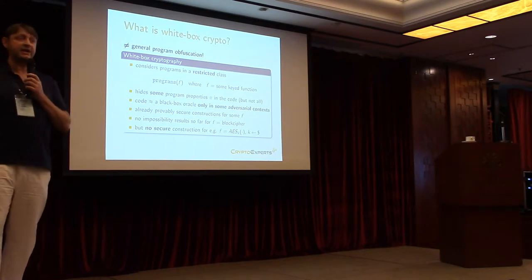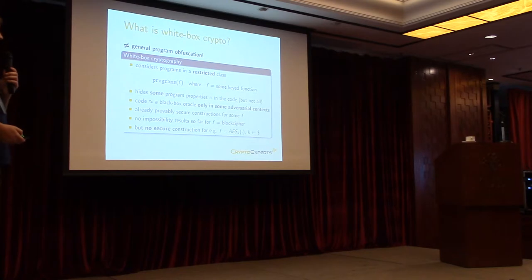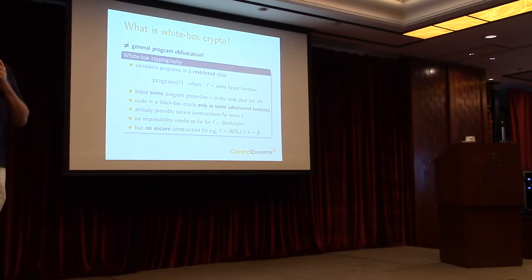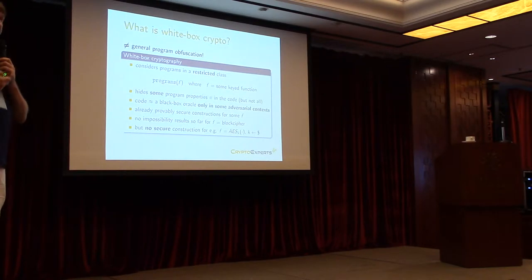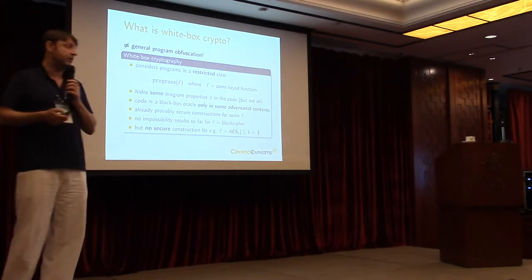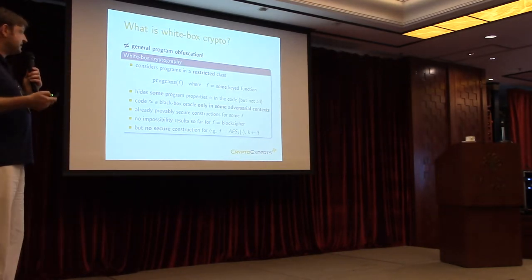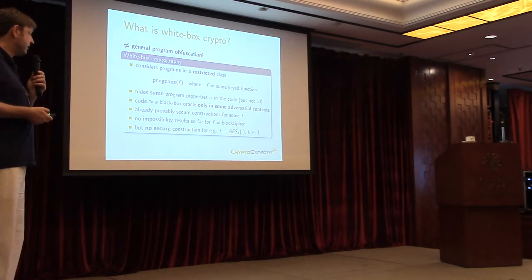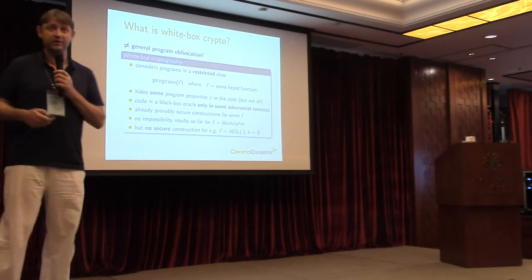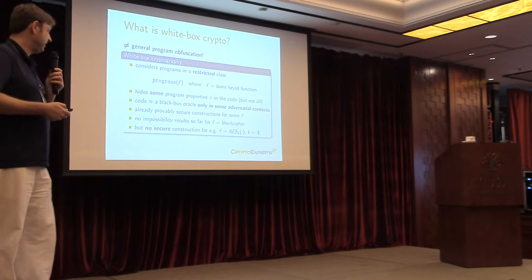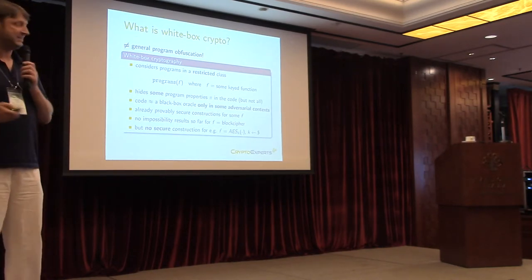When you try to model the security of whitebox programs, viewing the code as a black box oracle makes sense only in some contexts. We also do not know of any possibility results that apply in a very general way. We don't know of any construction, even for AES, that would be provably secure. There have been proposals but they've been broken, and we don't know if whitebox crypto even exists at all. So it's a very mysterious subject.